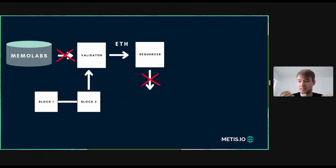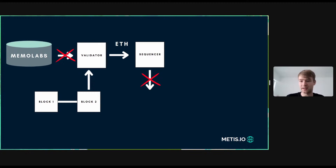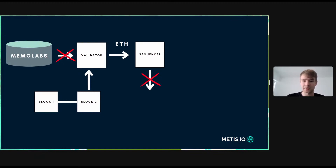There is a possibility that the sequencer does not post the data on-chain. In this case, you request the sequencer to do so, and the sequencer says it doesn't have the data. This means the sequencer is malicious — they posted an incorrect transaction batch Merkle root and now fail to post the actual transaction data. As a result, the sequencer gets slashed from the ecosystem.